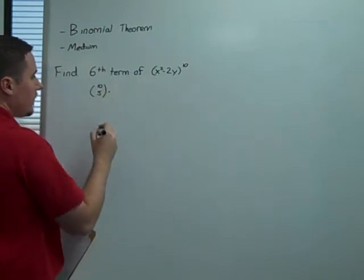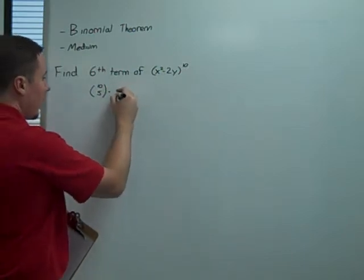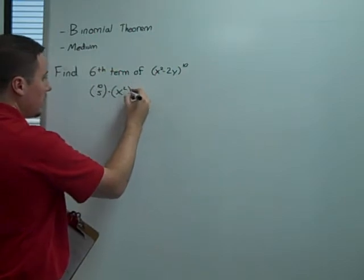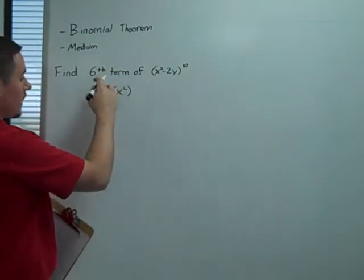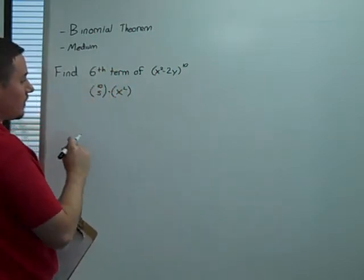Then we multiply it by x squared, raised to the 10 minus 5 power, which is 5.